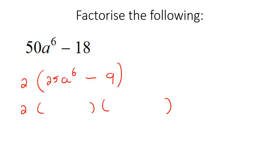We're going to make two brackets. The square root of this is going to be 5a to the power of 3 and 5a to the power of 3. And then the square root of 9 is 3, like that. And then put a plus in the one and a negative in the other.